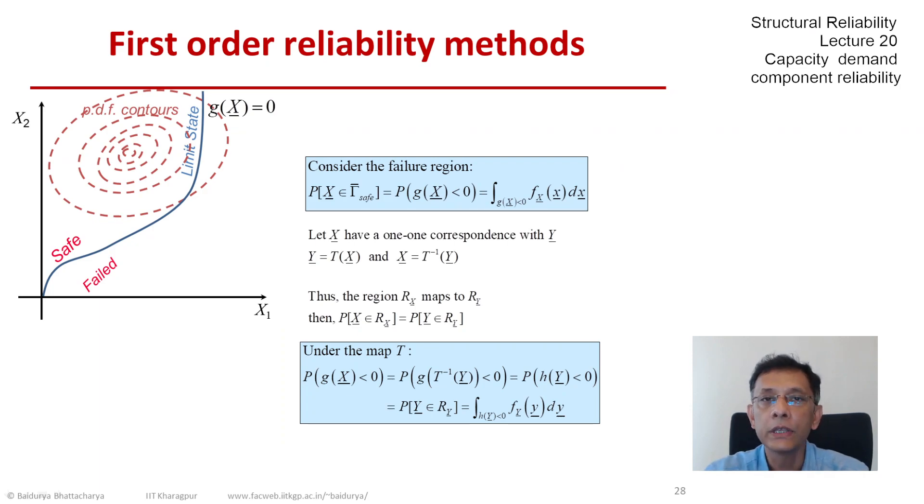Which basically means that the failure probability, whereas in the basic variable space we were trying to find the probability that X belonged to R_X, let us say R_X is the failure region.